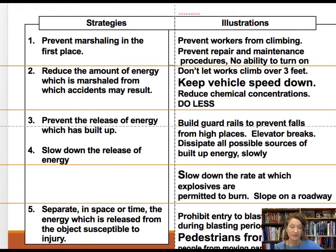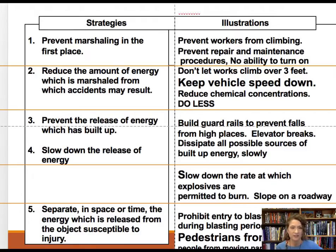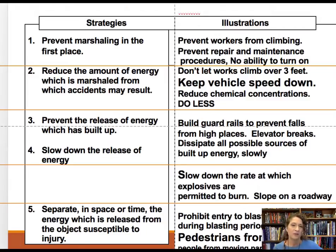Let's go over Haddon's 10 rules. The first one is just don't do it — prevent the marshalling of energy. An example for lockout-tagout procedures would be you don't have the ability to turn the machine on, so you prevent any energy from building up. Some other examples are preventing repair and maintenance procedures, or preventing workers from climbing.